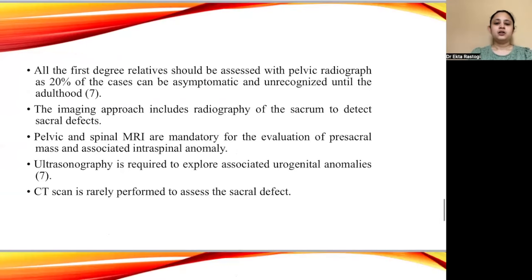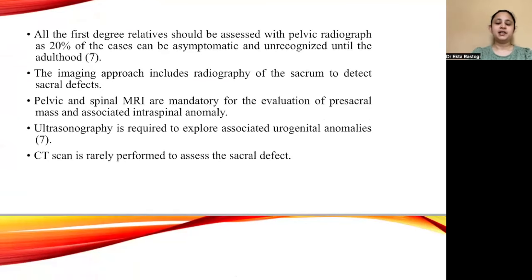All first-degree relatives should be assessed with a pelvic radiograph, as 20% of cases can be asymptomatic and unrecognized until adulthood. The imaging approach includes radiography of the sacrum to detect sacral defects. Pelvic and spinal MRI are mandatory for evaluation of pre-sacral mass and any associated intraspinal anomaly. Ultrasonography is also required to explore associated urogenital anomalies. CT scan is rarely performed to assess the sacral defect.